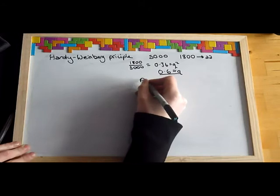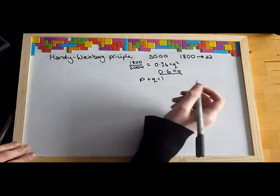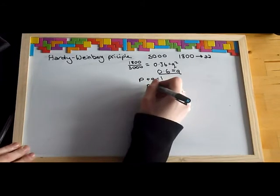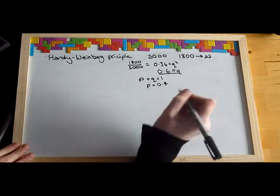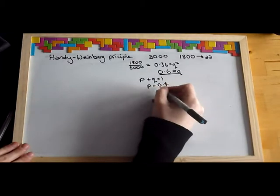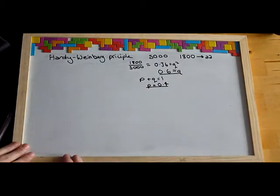Using P plus Q equals 1, you get P equals 0.4. And that's your answer — 0.4 is the frequency of the dominant allele.